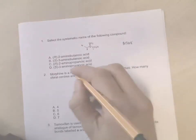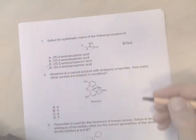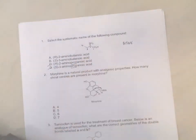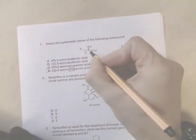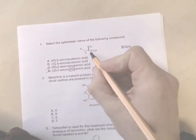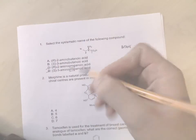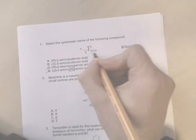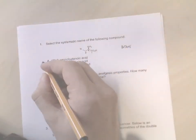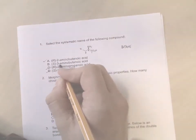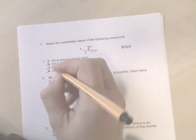Based on that, we can get rid of D and C as an option because they're both based on propane. Then you can see that you have an amino group, an amine, on carbon two. So it will be two-amino-butane-something, in this case butanoic acid.